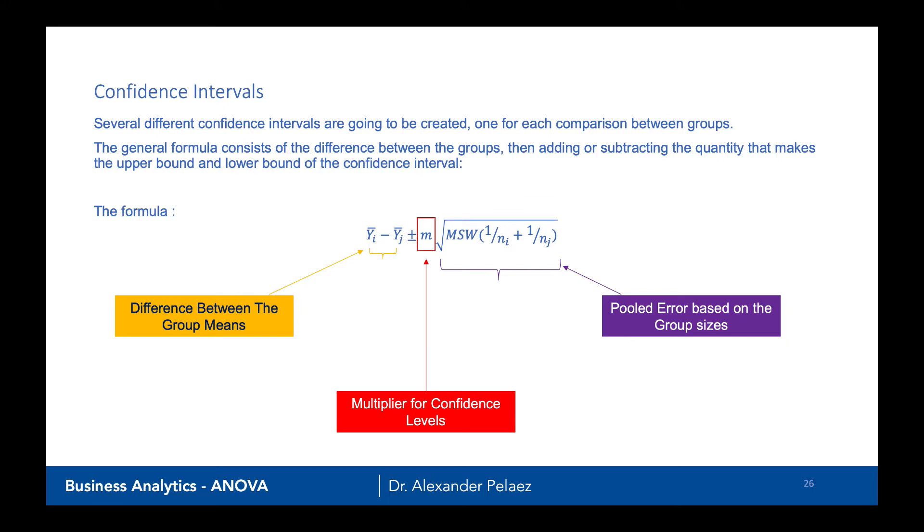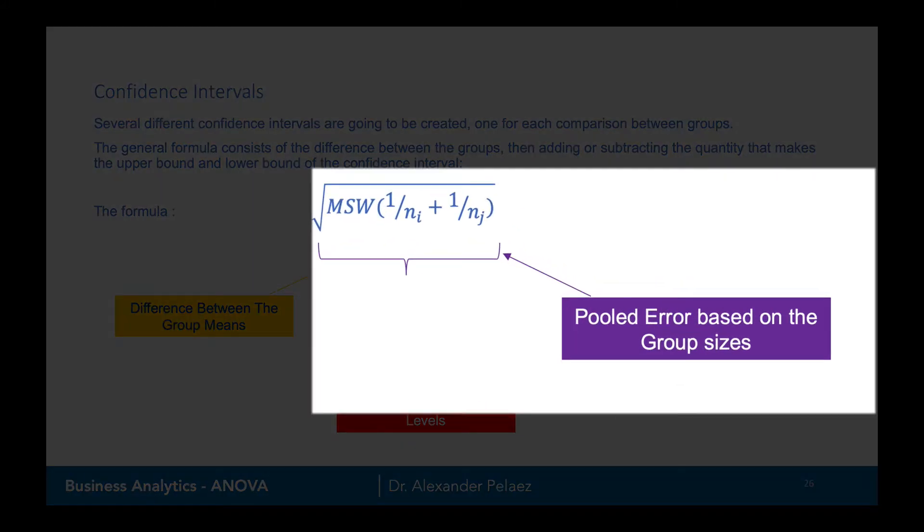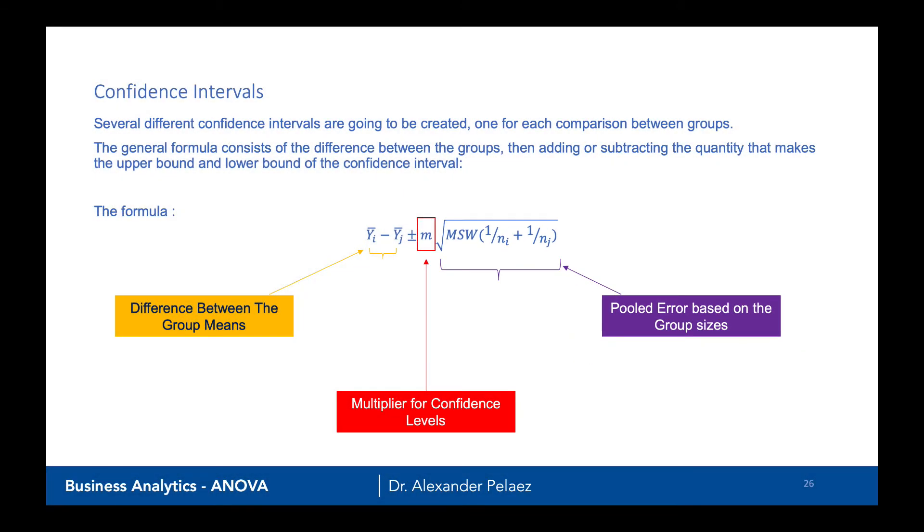The rightmost part is basically a pooled error. This is a calculation of determining the overall error based on the group sizes. You can see that it has the mean square within the groups, and then it has the observations of each of the groups as part of its computation.